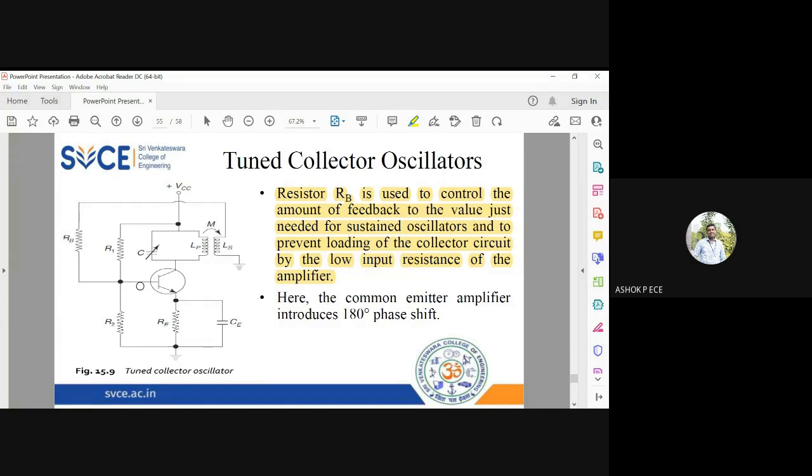You know the transistor is having a phase shift of 180 degrees, the transformer has a phase shift of 180 degrees. So the total phase should become 360 degrees, so the Barkhausen condition is satisfied.